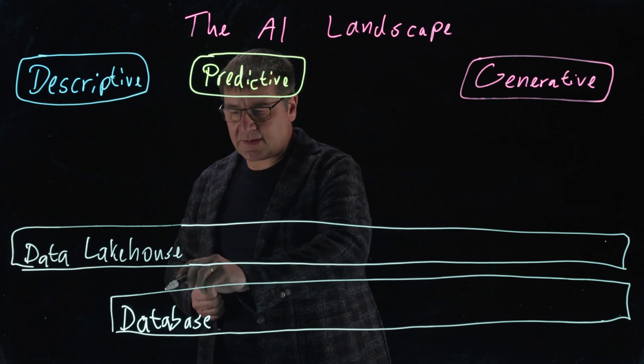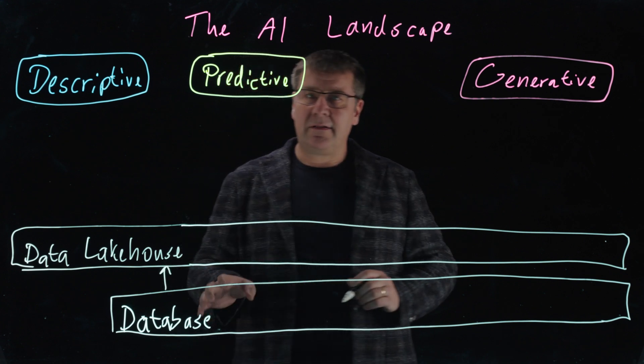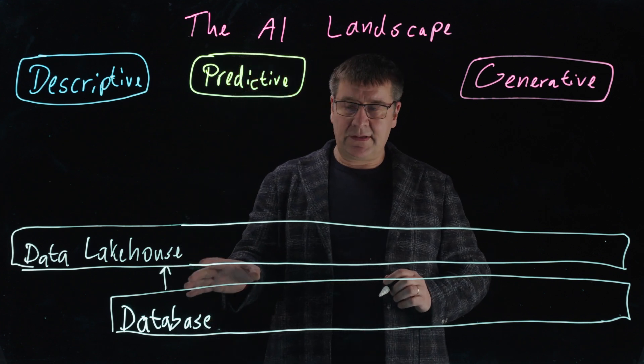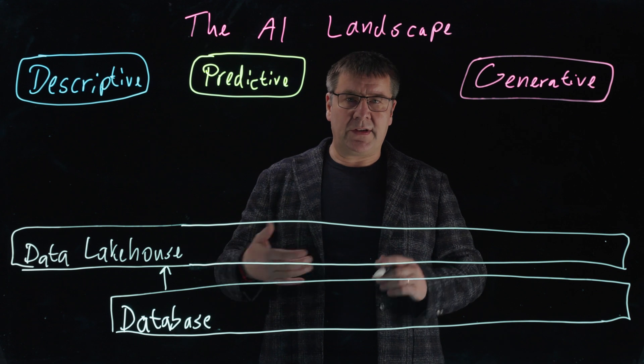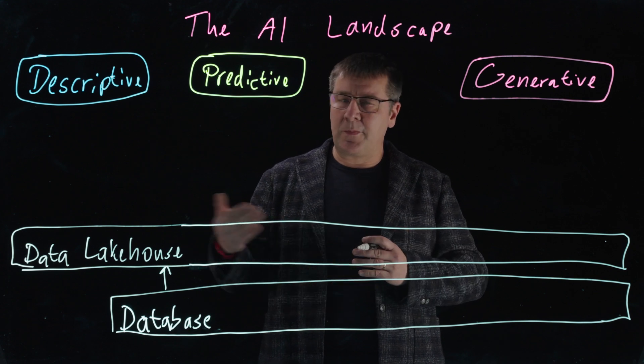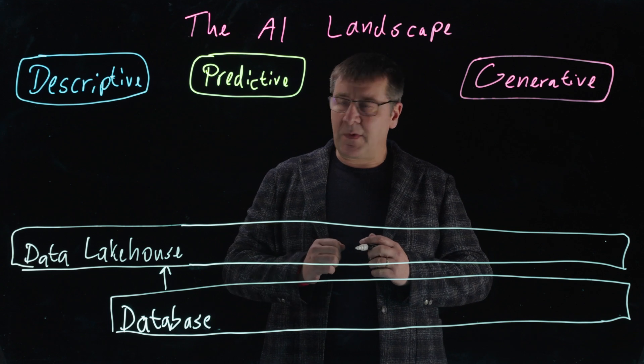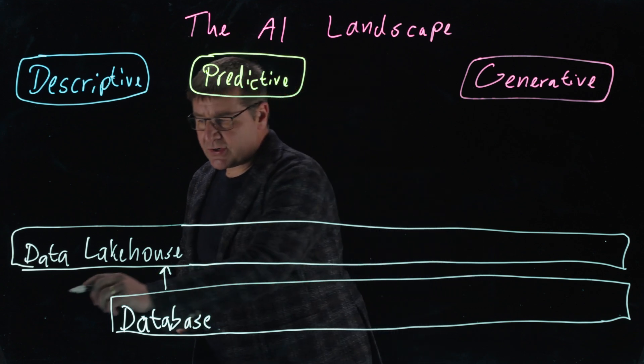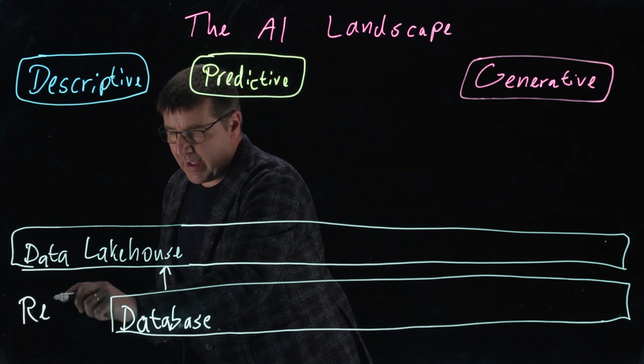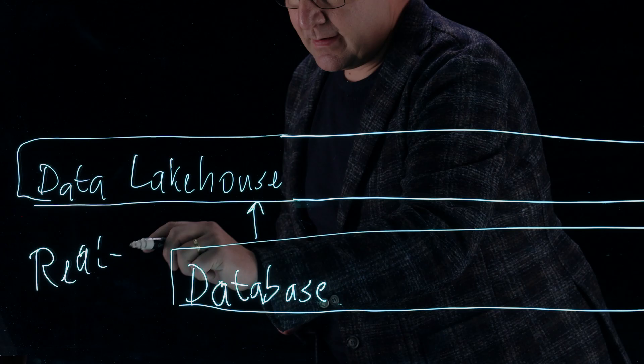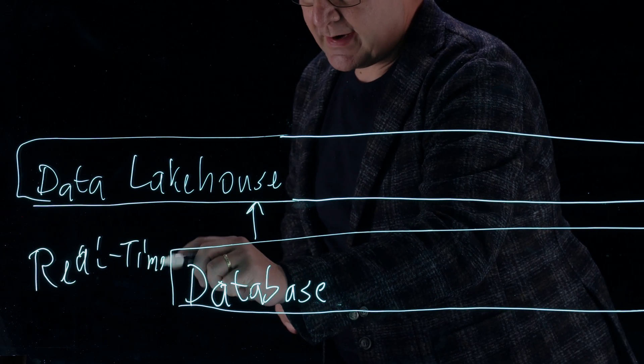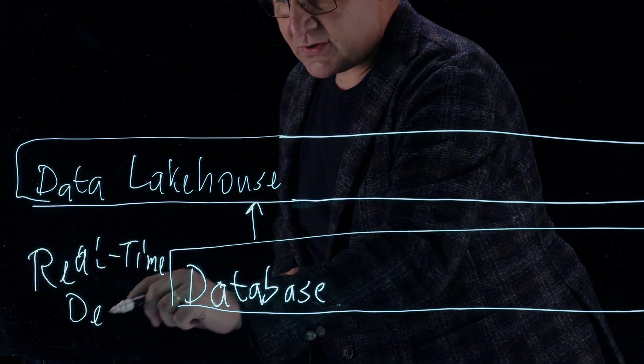So that's why it's important that we understand the relationship of both. Data is in systems of record in a database, and in order to analyze it, you put it into specialized formats, typically in something called a data lakehouse. But that's not the only place where data originates. Often data originates in real time and is directly ingested into your lakehouse in a streaming fashion.